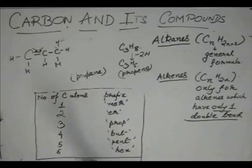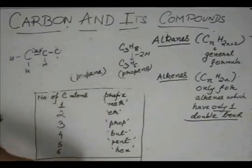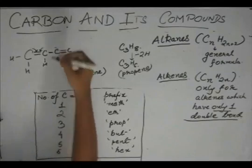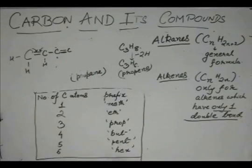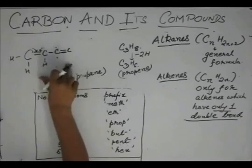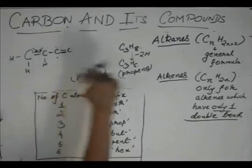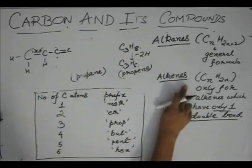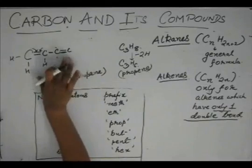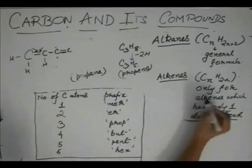There can be alkenes where, if the chain were longer, there could be a double bond at another position — that would also be an alkene. But the general formula CNH2N is not valid for these types of alkenes. If there are more than one double bonds, this formula will be wrong.